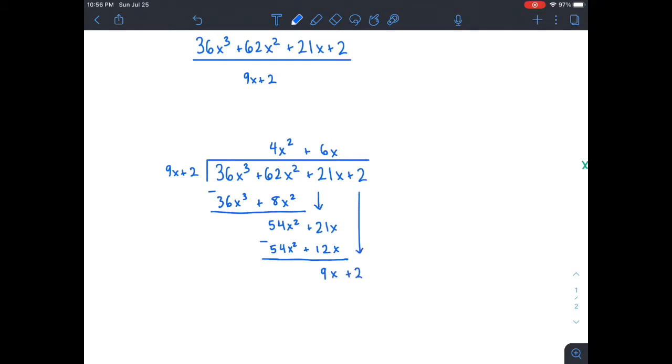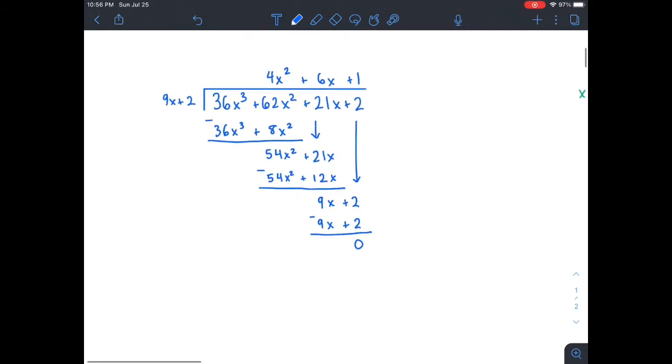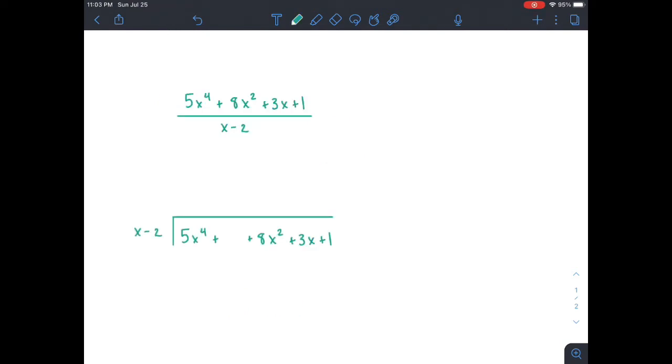And how many times does 9x go into 9x? That's just 1. And when we multiply that 1 by each term, we get 9x plus 2. And that leaves us with a remainder of 0. So our final answer is 4x squared plus 6x plus 1. So let's go on to our next example.